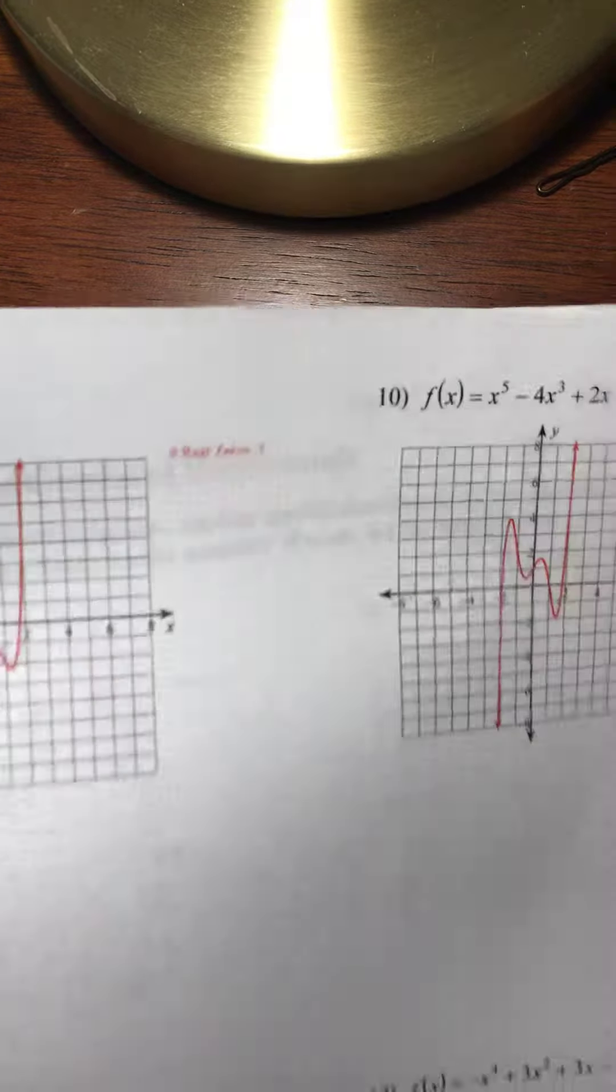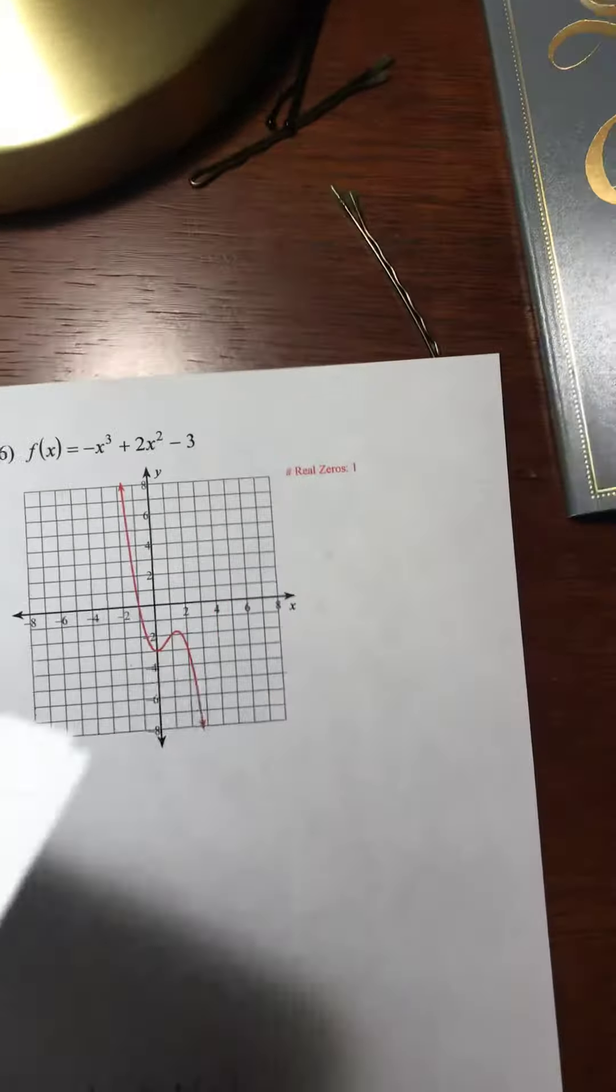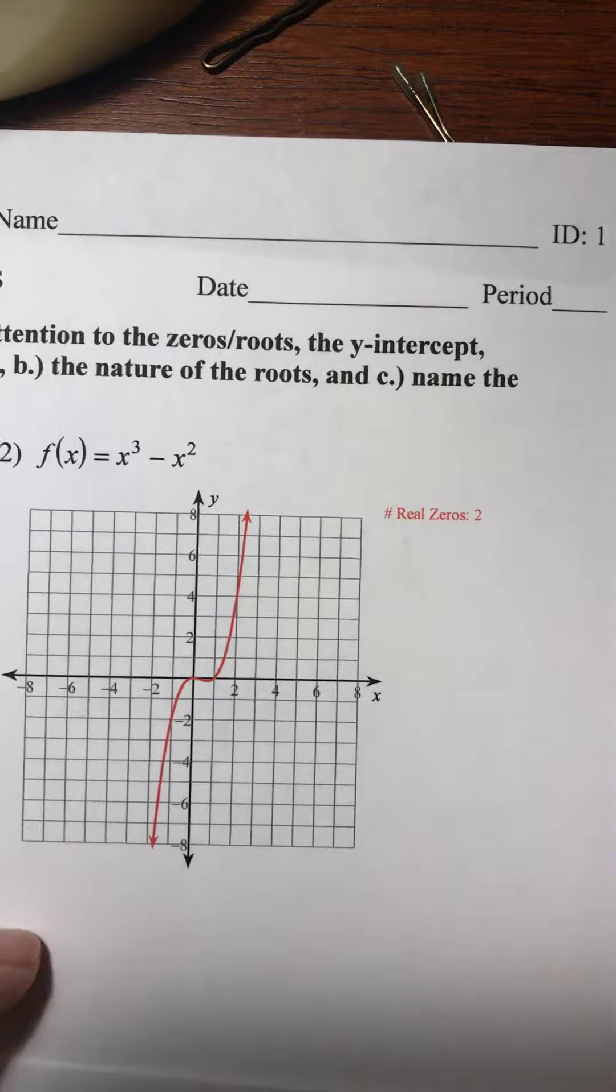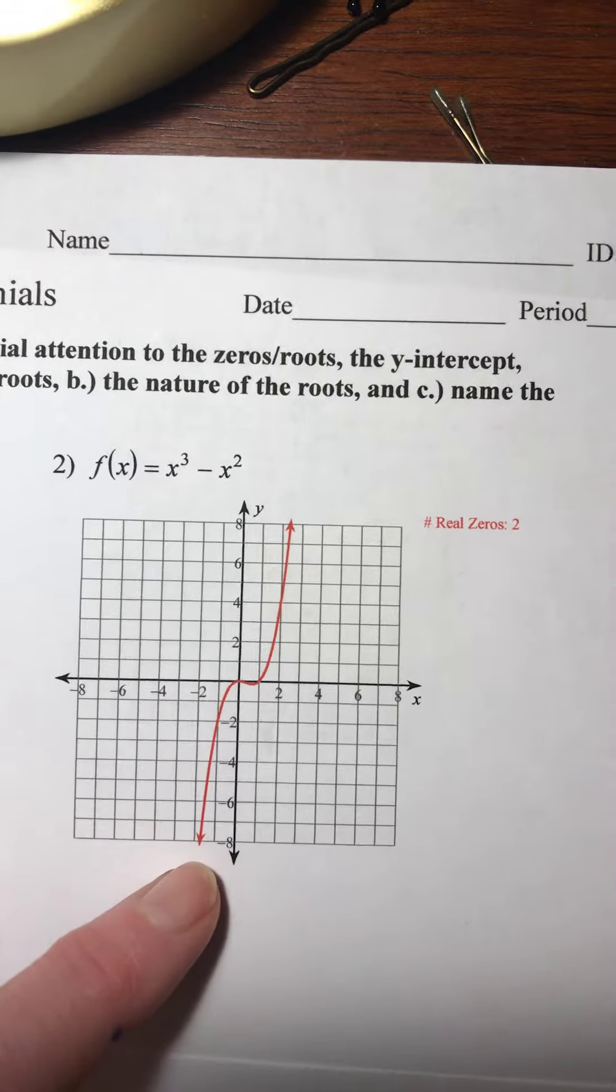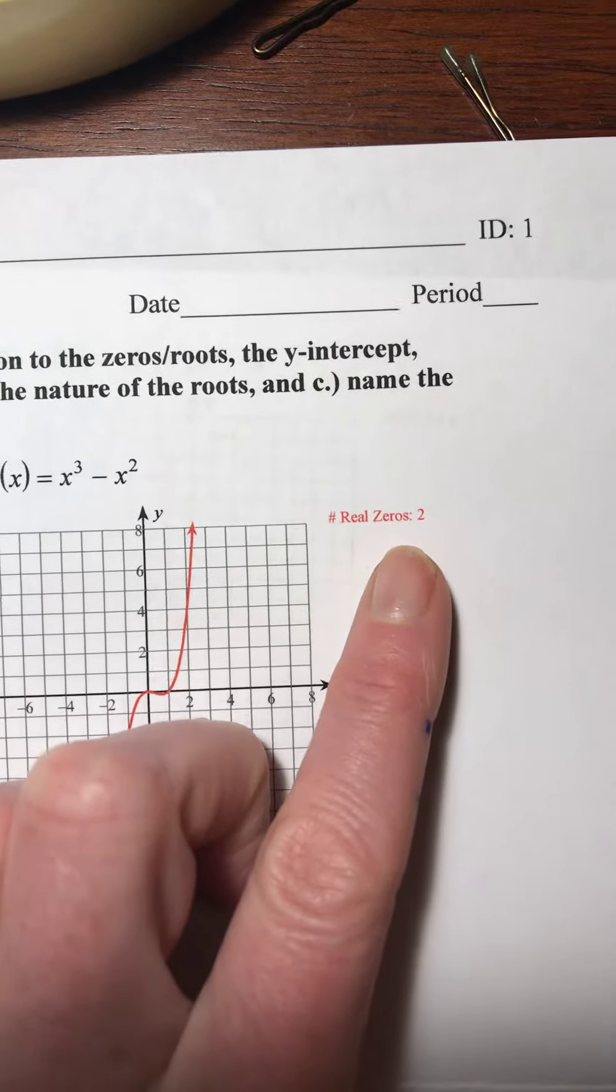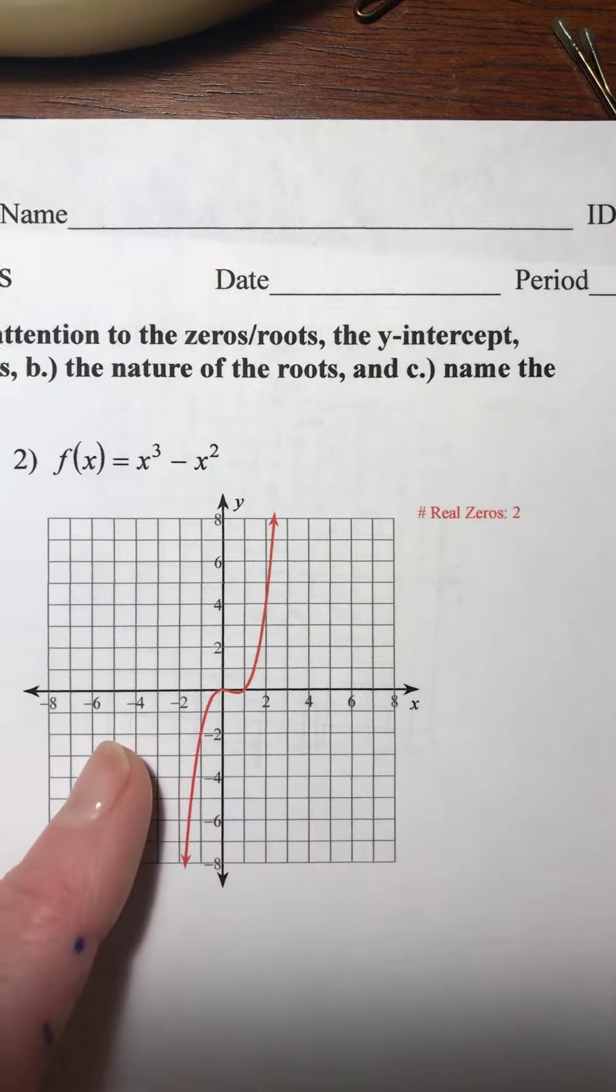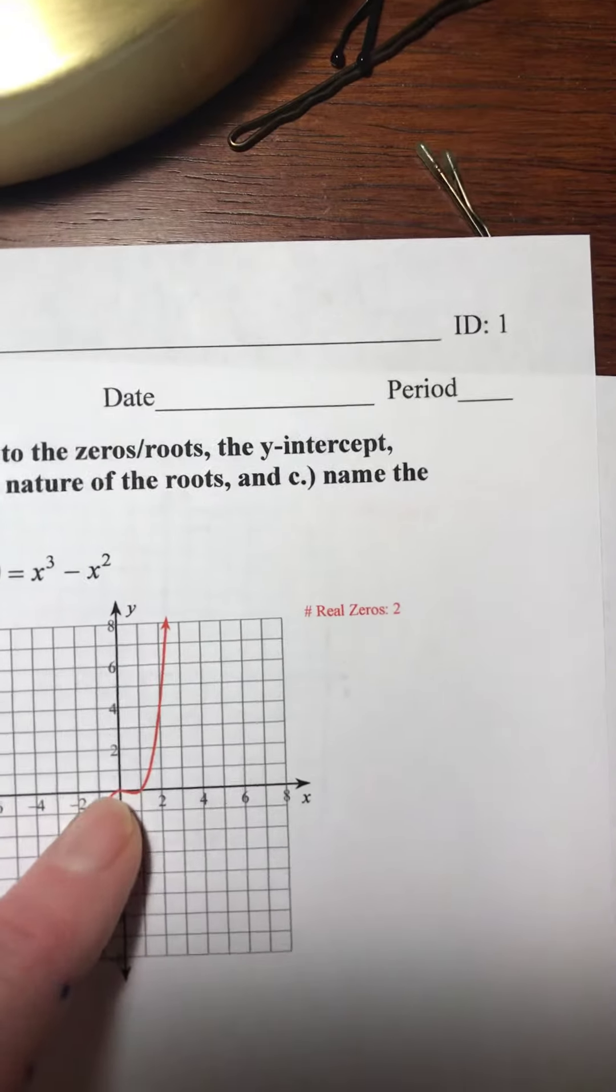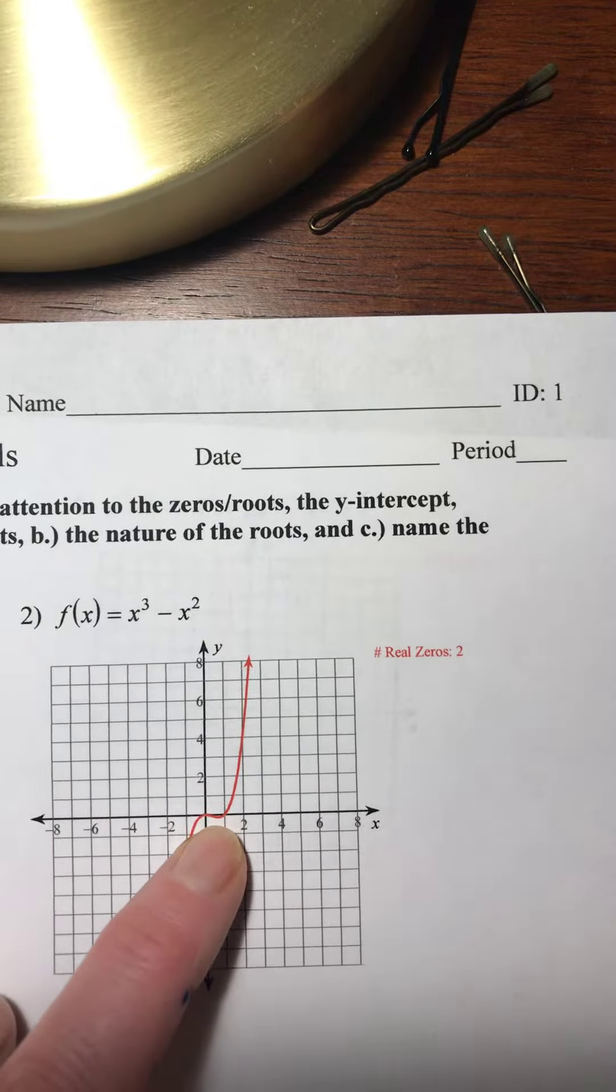And a sneak preview of our solution for question number two. Similarly, you see there's a degree three and two real roots, and you see that in this case, we also came up, bounced, and came back down.